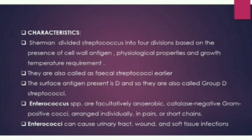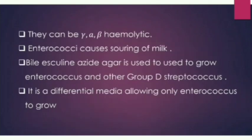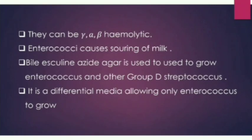They are facultatively anaerobic, catalase-negative, gram-positive cocci arranged individually, in pairs, and in short chains. Enterococci can cause urinary tract and soft tissue infections. They can be alpha, beta, or gamma hemolytic based on their pathogenicity. A selective agar called Bile Esculin Azide (BEA) agar is used for Enterococci species — it is a differential medium that only allows Enterococci to grow and exhibit growth while inhibiting other gram-positive and gram-negative organisms.